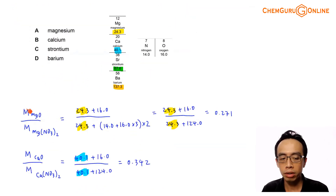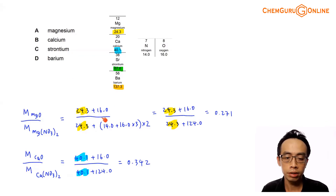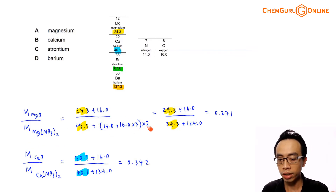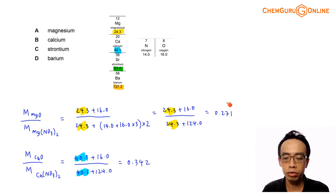For magnesium: the molar mass ratio of magnesium oxide to magnesium nitrate is calculated as (24.3 + 16.0) divided by (24.3 + 2×(14.0 + 16.0×3)). The atomic mass for magnesium is 24.3 and for oxygen is 16.0. This works out to 40.3 over 148.3, giving a ratio of 0.271.